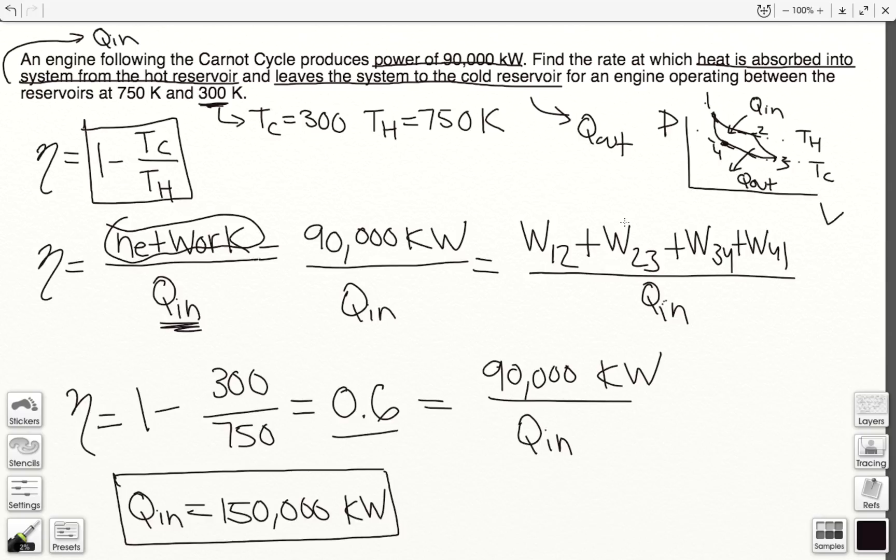Now, in the derivation of efficiency, I explained why these two cancel out, and that's because the process from 2 to 3 and 4 to 1, they're both adiabatic, isentropic, for an ideal gas.